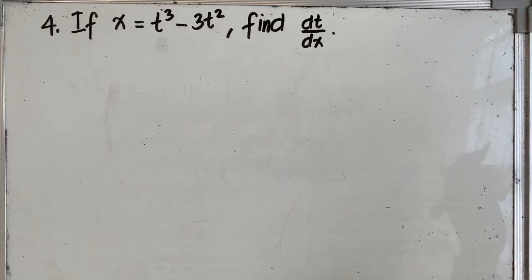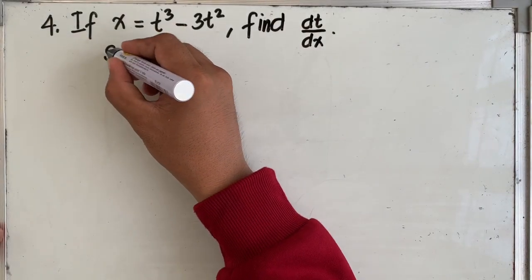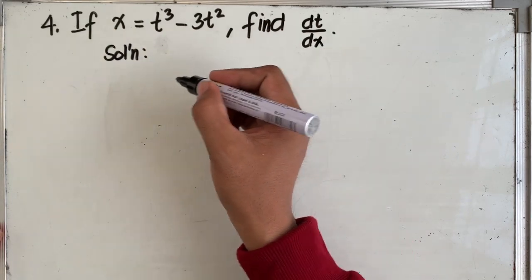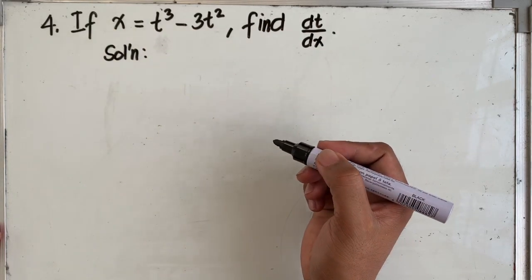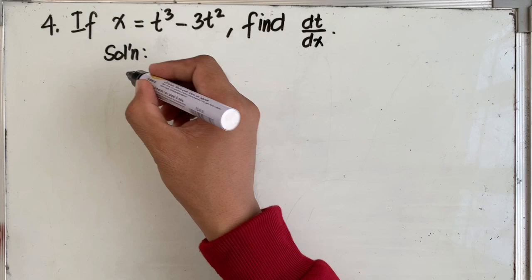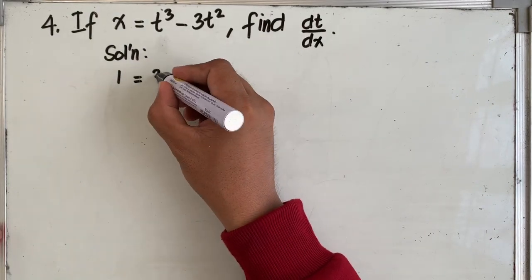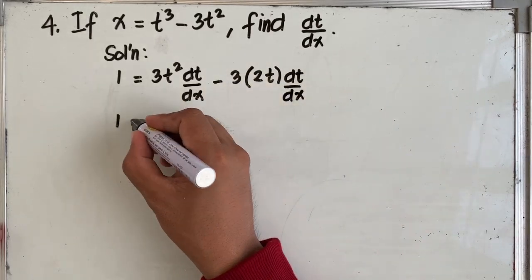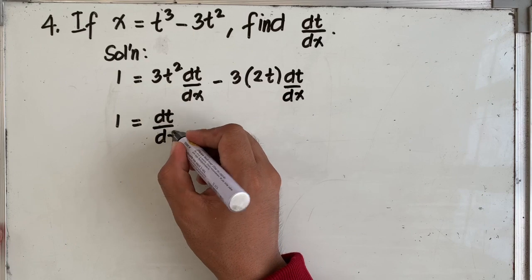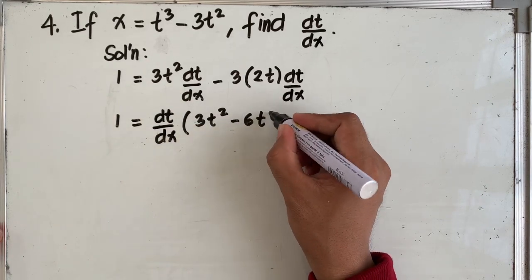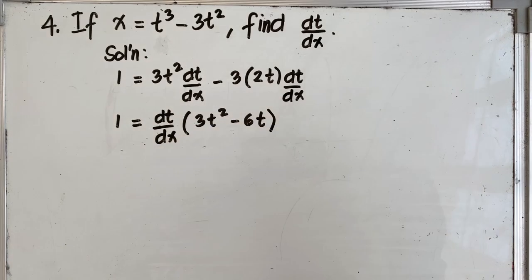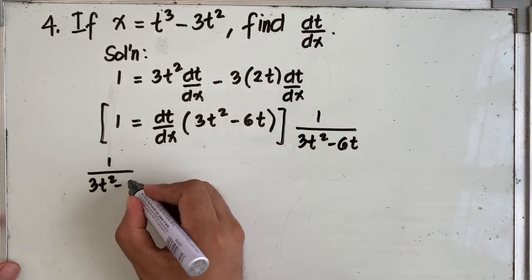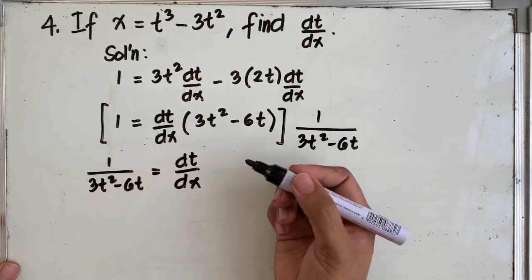Problem number 4: if x is equal to t cubed minus 3t squared, find dt over dx. In this example, t is the unknown function or the dependent variable and x is the independent variable. Now we differentiate, then factor out dt over dx at the right side of the equation, and divide both sides by 3t squared minus 6t to solve for dt over dx.